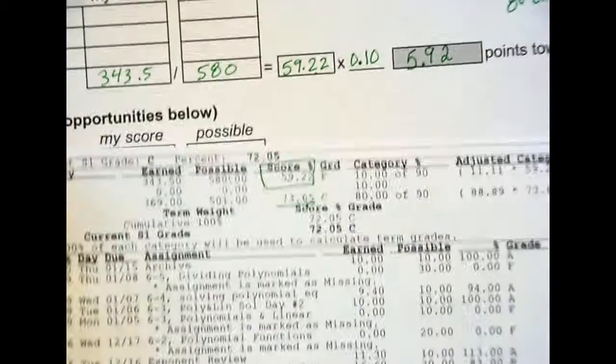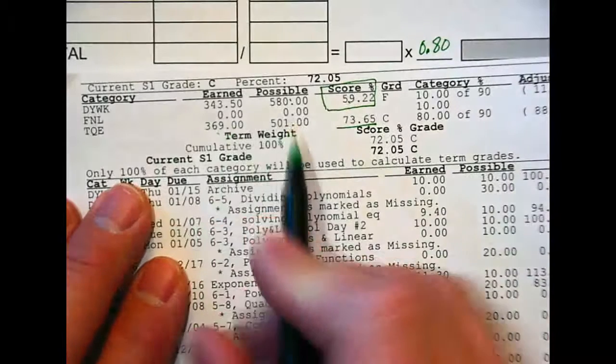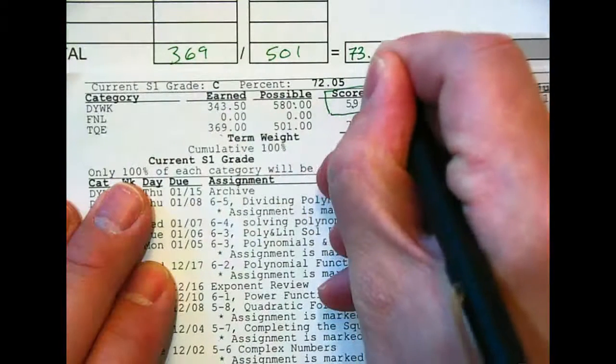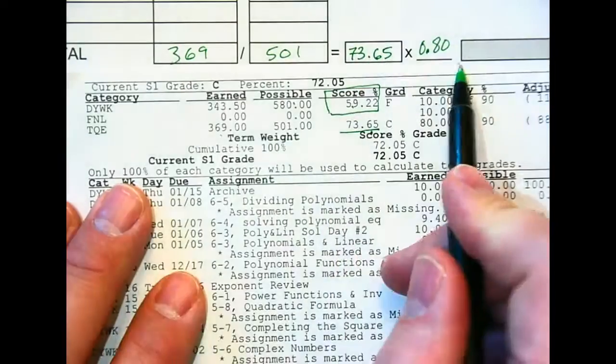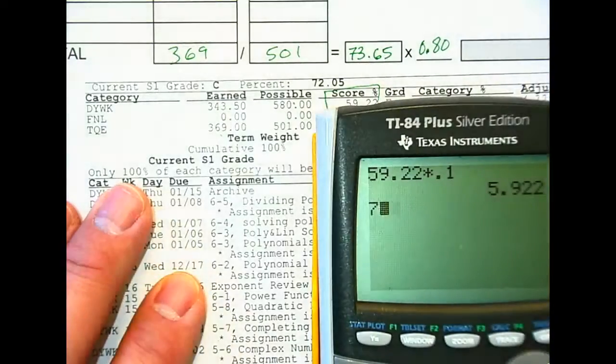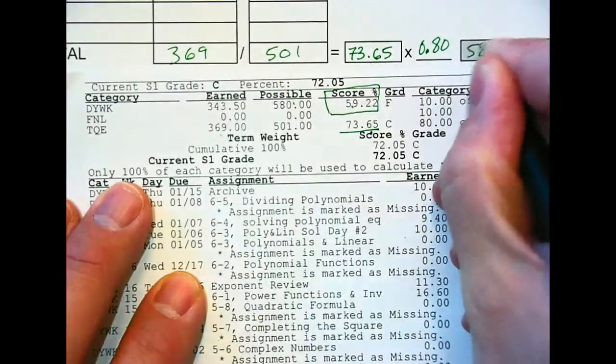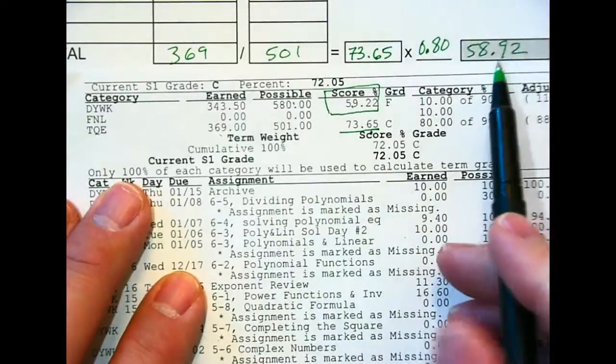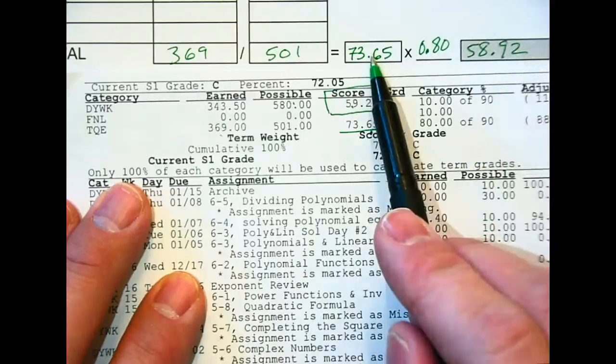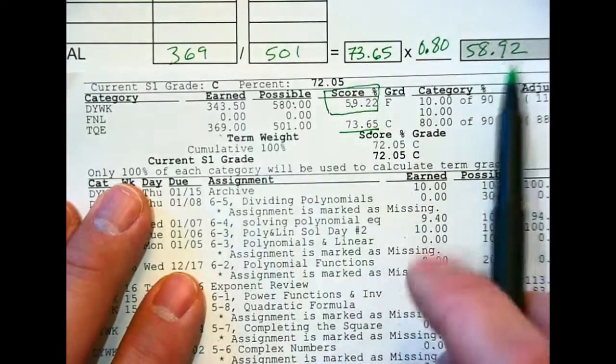Next piece. Test and quizzes. Those are set in stone. My test and quiz category right now is 369 out of 501. That is a 73.65%. I get 80% of that percent. When I get 80% of that percent, 73.65 times 0.8, that gives me 58.92. That is what I earned from test quizzes. That's how many percent I've earned. I add a C here. It gave me 58.92 percentage points towards my final grade. Can I change this? No. No.